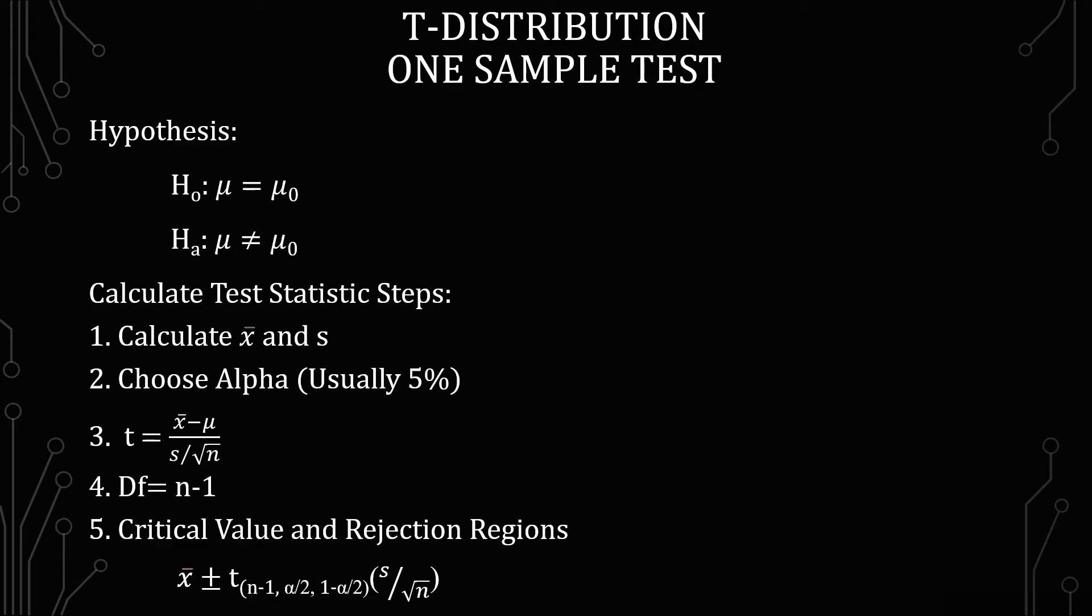The next is to calculate the t statistic itself, and so you have the sample mean minus the μ equals the standard deviation over the square root of n. And n is your sample size. The degrees of freedom is n minus 1.